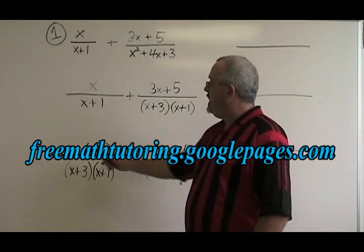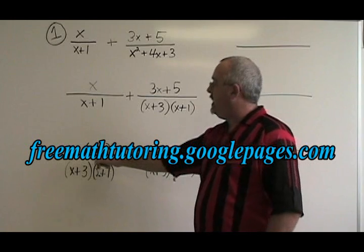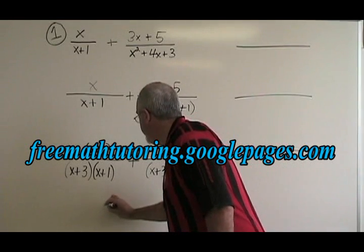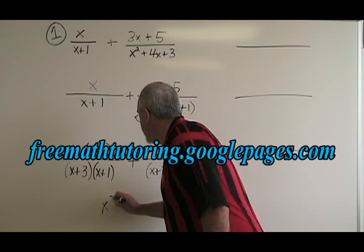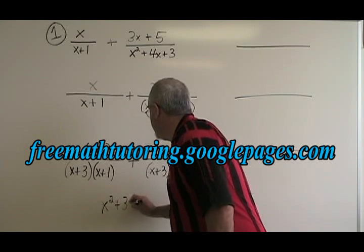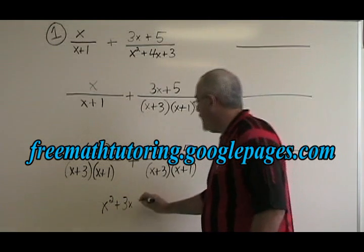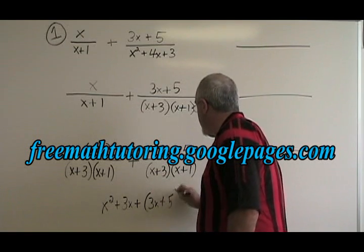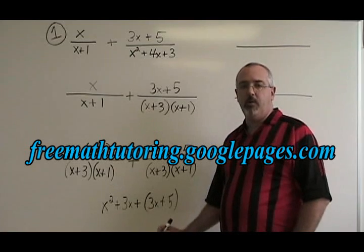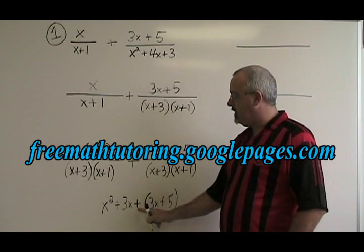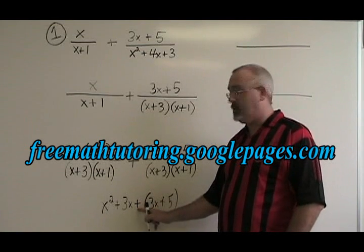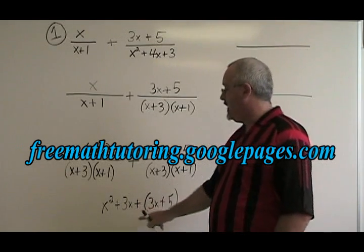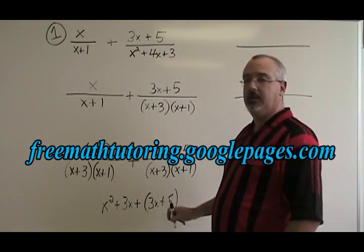The next thing we have to do is the polynomial phase. We have to multiply this out. x times x plus 3 equals x squared plus 3x, and 3x plus 5 has to be added to that. I put the 3x plus 5 in a bracket because I'm being careful. Sometimes this plus is a minus when I'm subtracting, so I want to be careful with my signs. This simplifies though to x squared plus 6x plus 5.